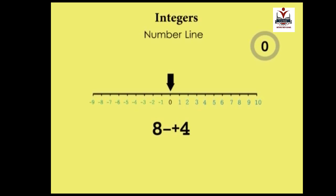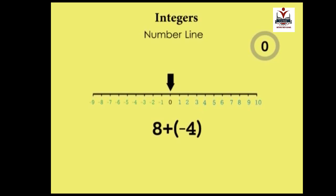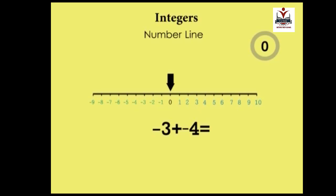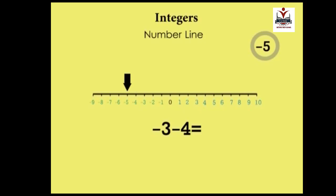So 8 minus plus 4 is equal to 8 minus 4. And 8 plus minus 4 can be written as 8 minus 4. Even with a bracket — 8 plus (minus 4) — we still have 8 minus 4. So minus 3 plus minus 4 simplifies to minus 3 minus 4. From zero, three steps left, then four more steps left gives us minus 7.